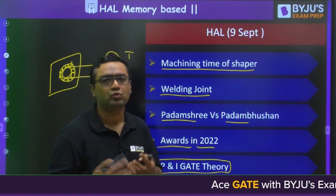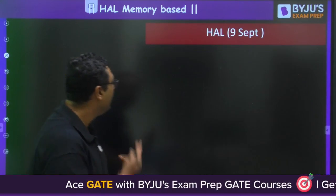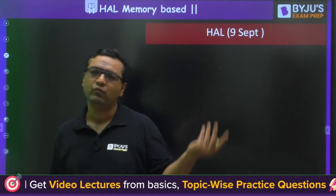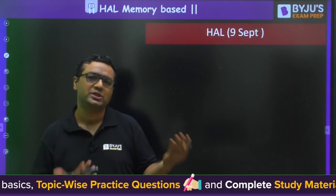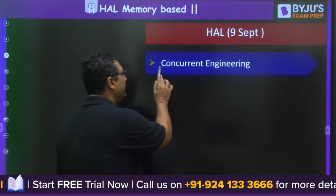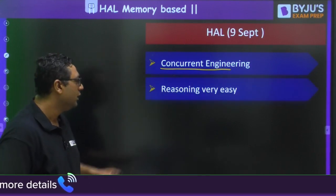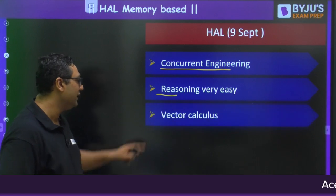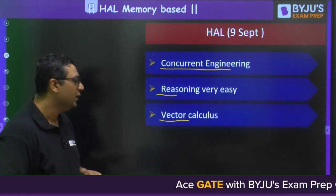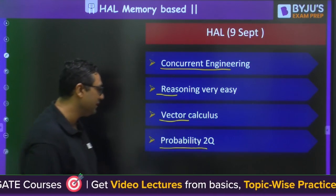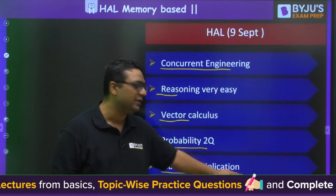For mechanical students, you can expect one-mark theory questions from Gate Mechanical to continue in a similar pattern. In HL the number of questions is more and time is less, so the level of questions was decent and easy. Concurrent engineering was asked — it also appeared in Gate P&I. Reasoning was very easy. Vector calculus had three to four questions covering line integrals and divergence. Probability had two questions in mathematics. Matrix multiplication and one question on eigenvalues were also there.